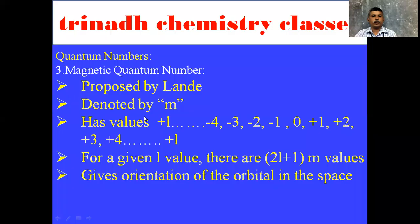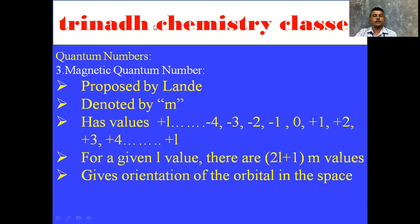The third one is the Magnetic Quantum Number. It is proposed by Lande and is denoted by the letter small m. It has values from minus L to 0 to plus L, giving a total of 2L+1 values. It gives the orientation of the orbital in space.